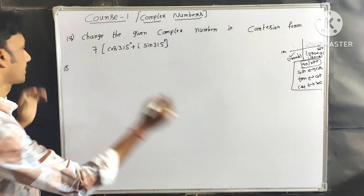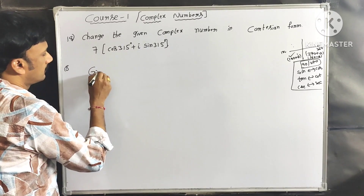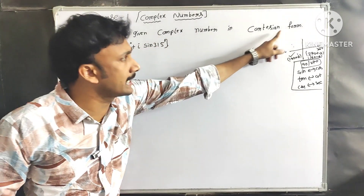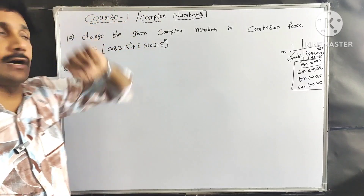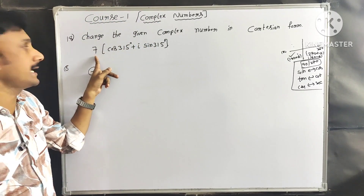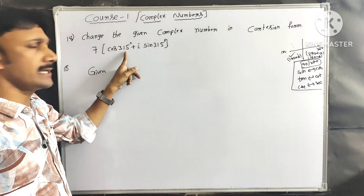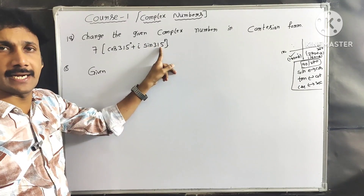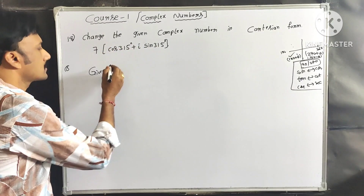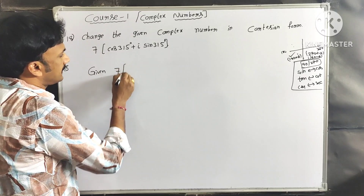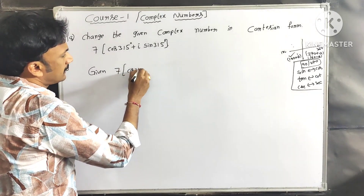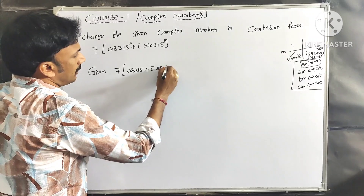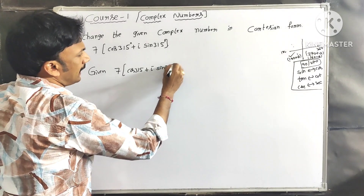Next problem: change the given complex number in Cartesian form. The complex number is 7(cos315° + i·sin315°). So the given complex number is 7·(cos315° + i·sin315°). We need to calculate the values of cos315° and sin315°.